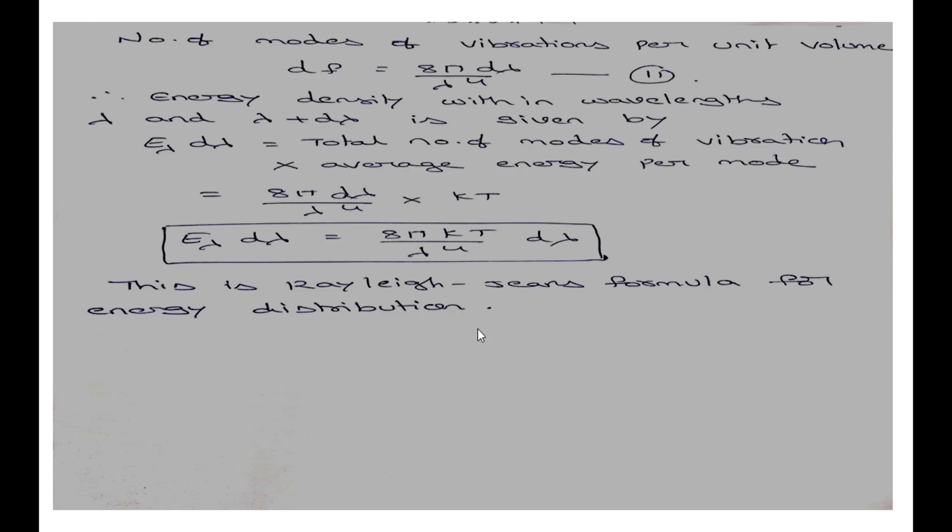In this approach, radiation is considered as a wave, so we consider the nodes, antinodes, and frequencies. The energy distribution is calculated as E(λ)dλ = 8πkT/λ⁴·dλ, and the radiation displacement law gives λₘ·T = constant. Thank you.